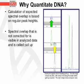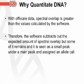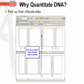The diagram shows a small peak in blue which is pull-up that resulted from the green peak, and also a small peak in green that was pull-up that resulted from the yellow peak. With off-scale data, the spectral overlap is greater than the values calculated by the software. Therefore, the software subtracts out the expected amount of spectral overlap, but some of it remains and is seen as a small peak under a main peak, and it can be assigned an allele call. This diagram shows pull-up in the yellow dye from the off-scale peak in the green dye. It is important to notice that the pull-up peak is lined up directly under the main peak that is causing it.